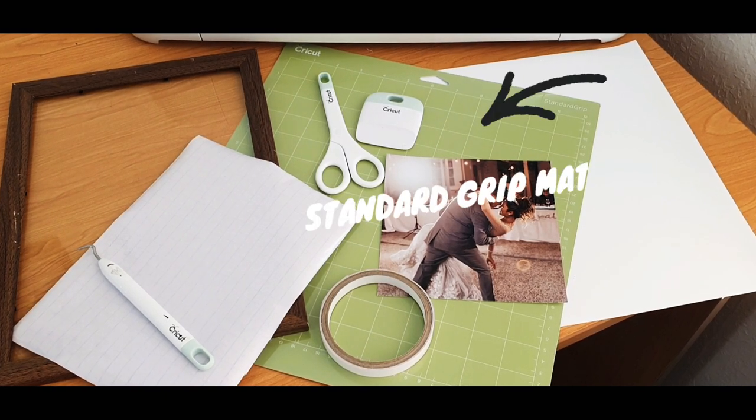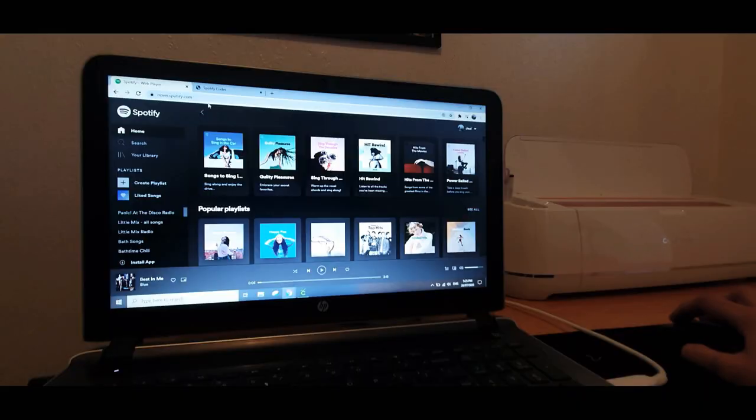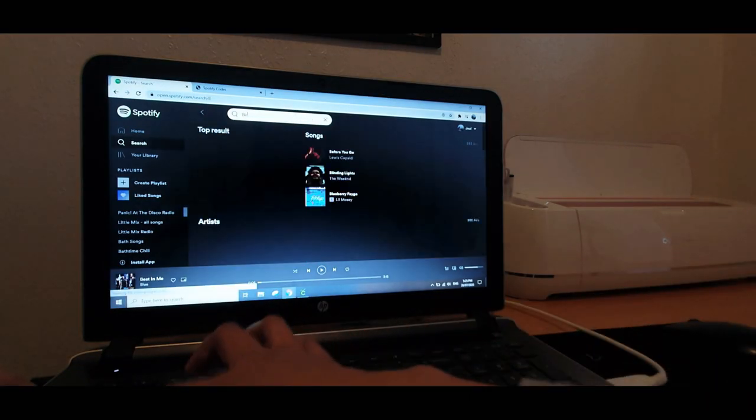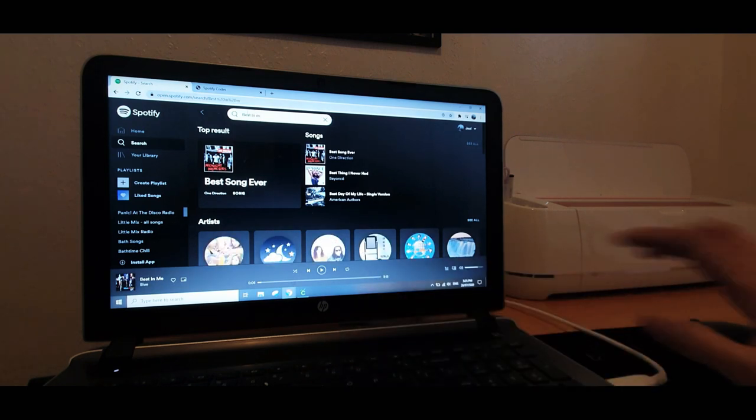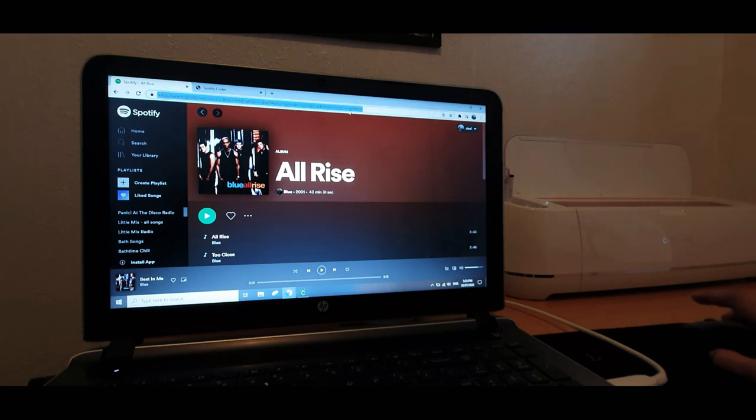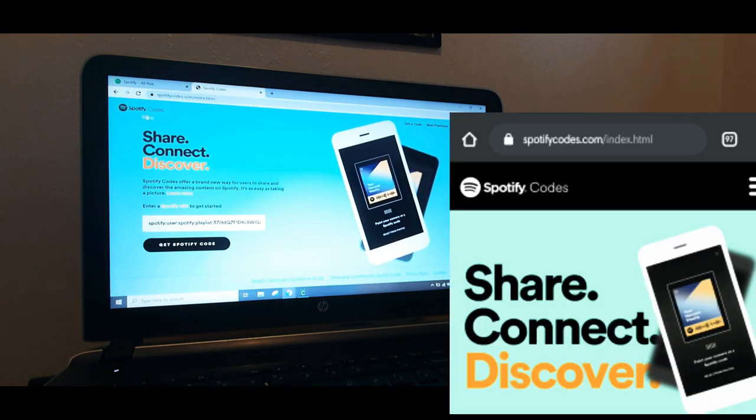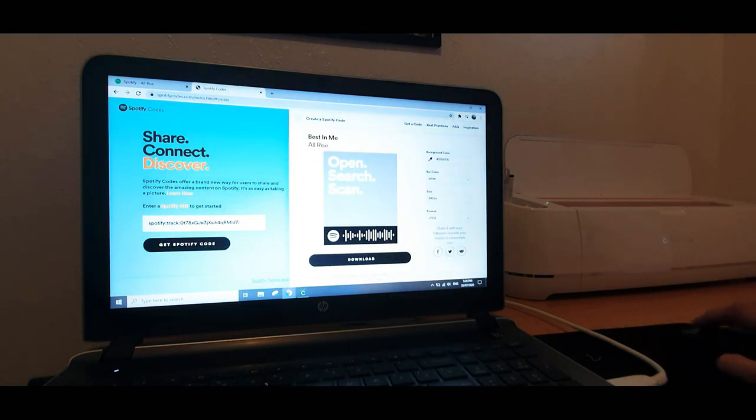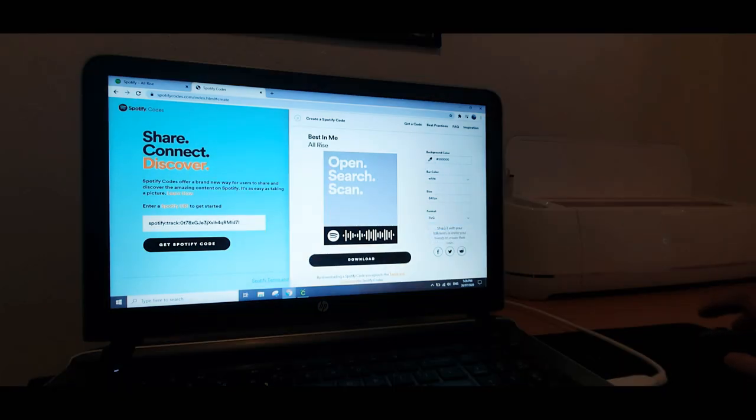First step is to open your Spotify account, find the song that you want to use, copy the URL like so, and then go to spotifycodes.com. Then paste the URL. It will then ask you if you want to download it. You have to choose SVG file and then click download.